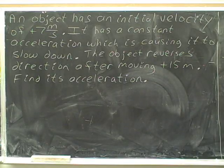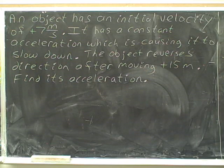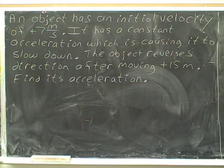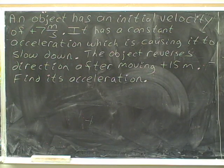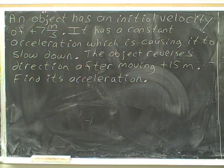Here's our next problem. An object has an initial velocity of positive 7 meters per second. It has a constant acceleration which is causing it to slow down. The object reverses direction after moving positive 15 meters. Find its acceleration.